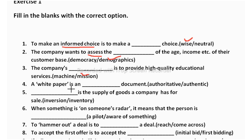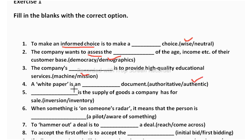The fourth one: a white paper is a blank document — authoritative or authentic? Authoritative means someone is dominating another, so that does not fit. Authentic means something that is not a copy, not duplicate — it is original. So a white paper is an authentic document.